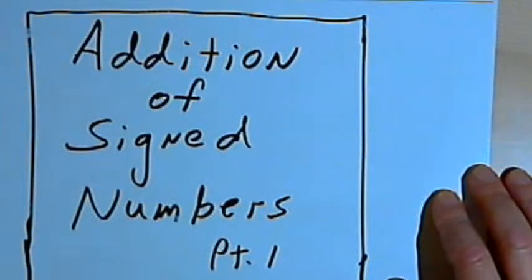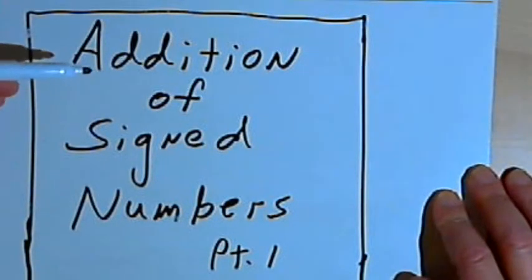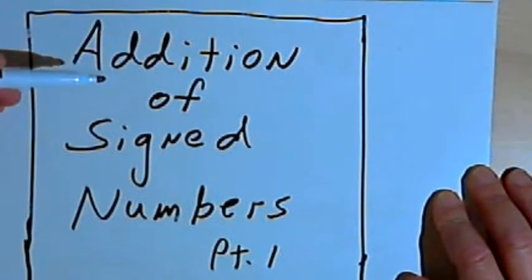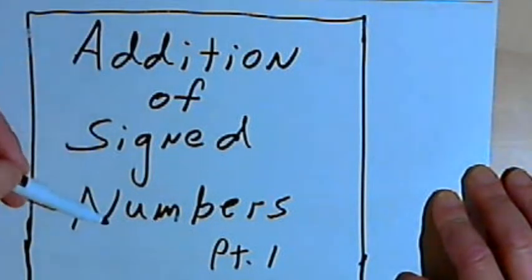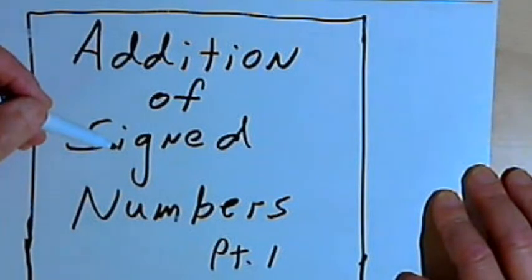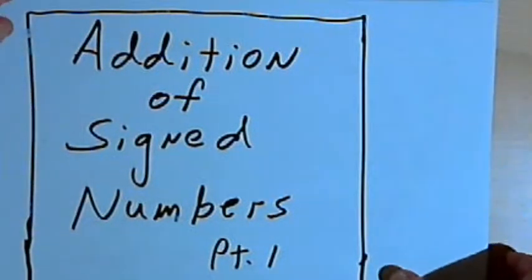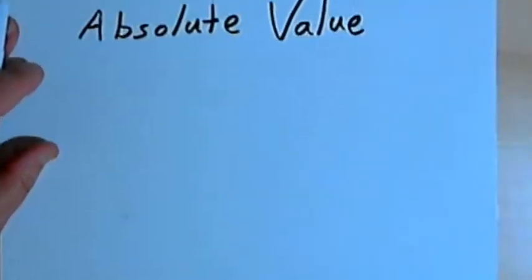This video is provided as supplementary material for courses taught at Howard Community College. In this video I want to talk about the addition of signed numbers, or positive and negative numbers. So in order to do this, I have to discuss absolute value for a second.